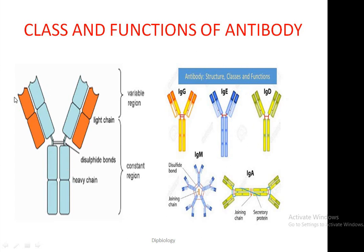The variable regions of each arm of the Y-structure have antigen binding sites. These variable regions are further subdivided into two parts: one is the hypervariable regions and the other is the framework regions. The light chain possesses two domains: one is the variable light chain domain and the other is the constant light chain domain.